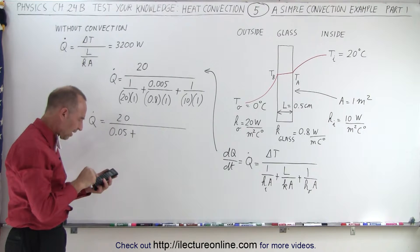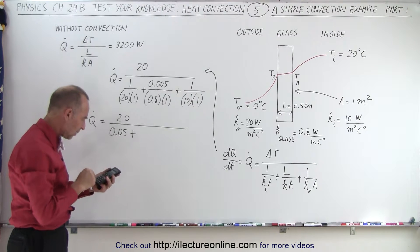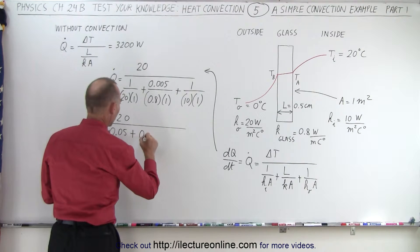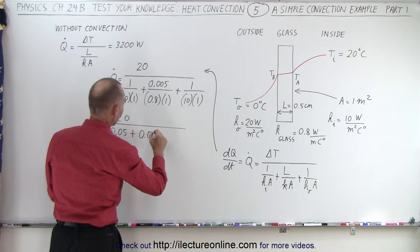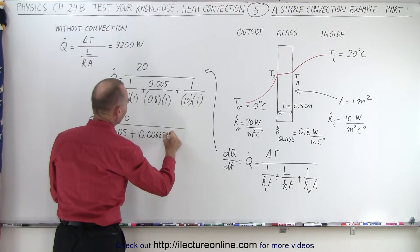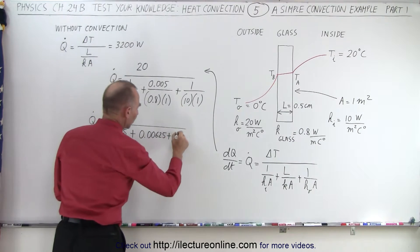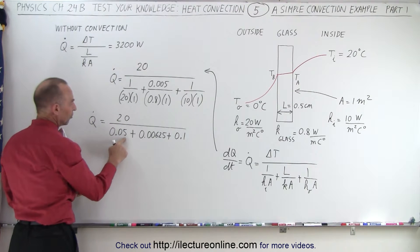Plus 0.005 divided by 0.8 equals, that would be 0.00625, plus over there that would be 0.1.